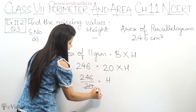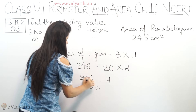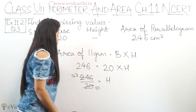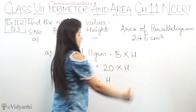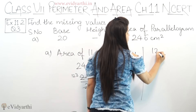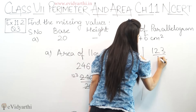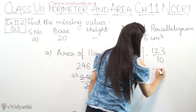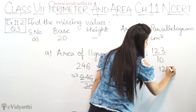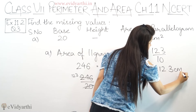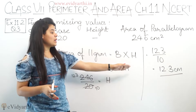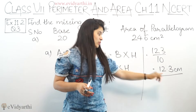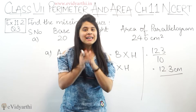We cancel this. 2 goes into 20 as 10, and 2 goes into 246 as 123. So we get 123 upon 10. Now since there is a zero below, we can directly put a decimal. So that will be 12.3 cm. The height is 12.3 cm. So the missing value here was height, and we found it as 12.3 cm.